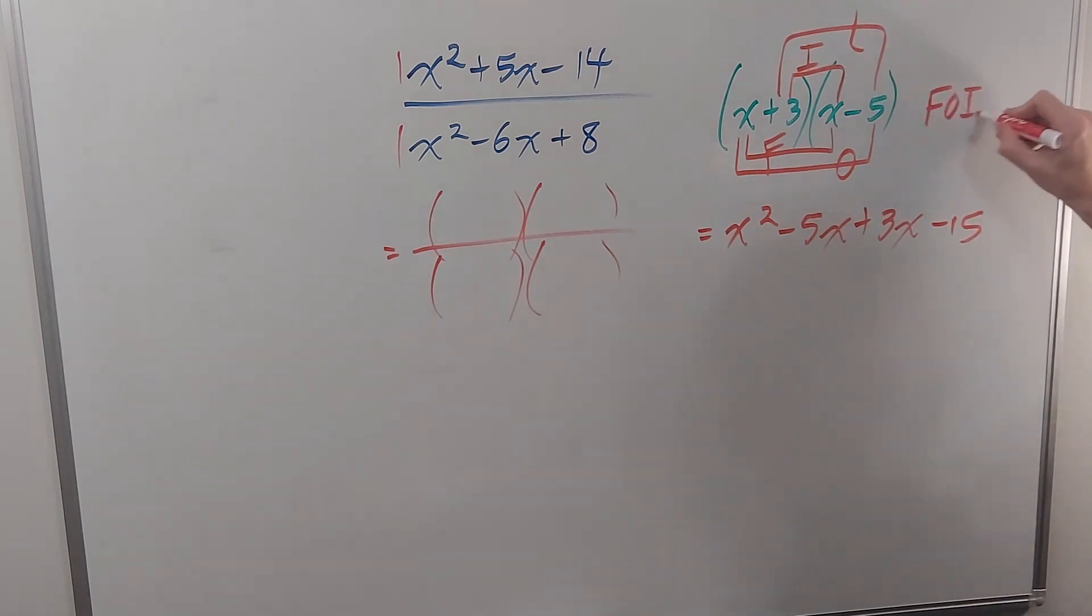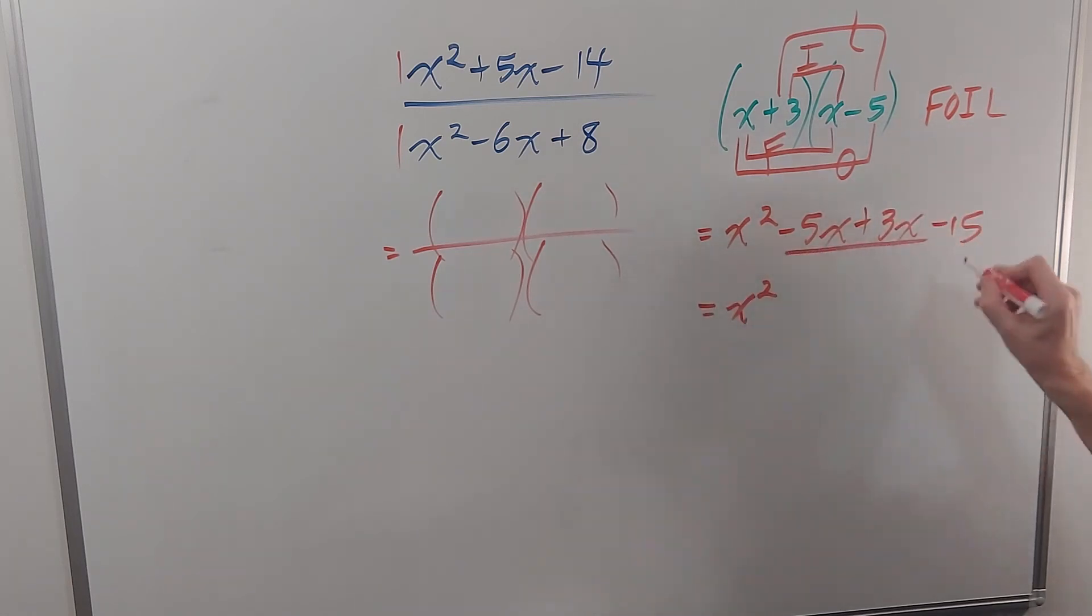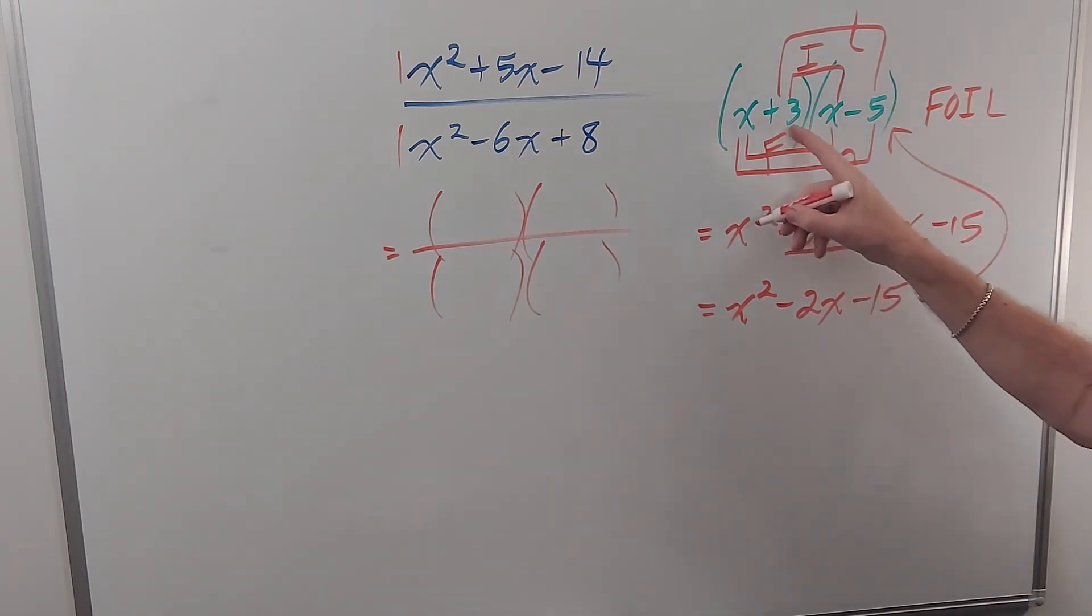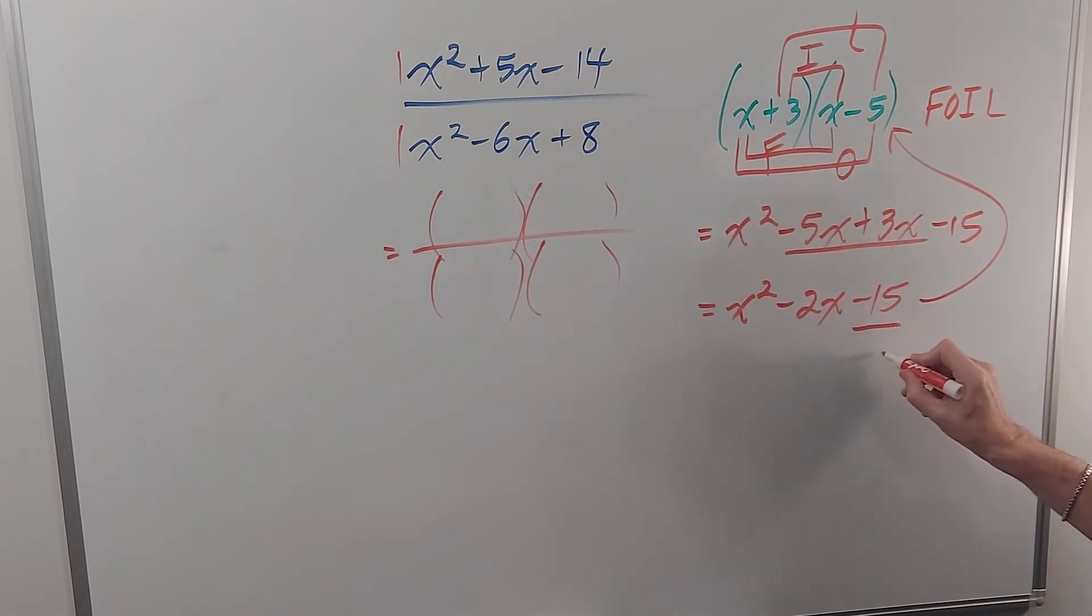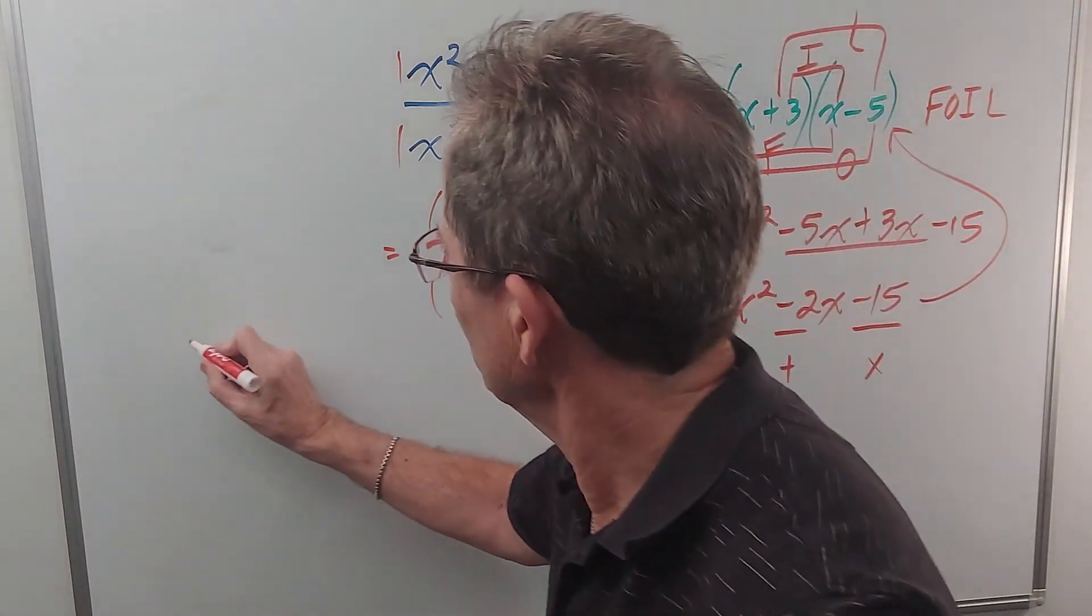Now we can simplify this one more step by combining those two like terms. That gives me negative two x. So if I want to go backwards, I've got to find these two numbers. They have to multiply to this and they have to add up to that. So if I use the same logic over here, I need two numbers...